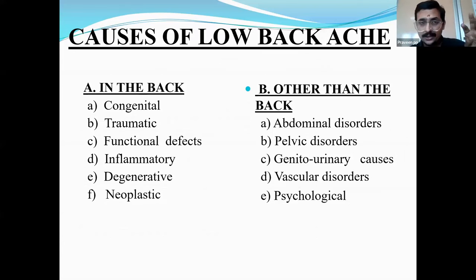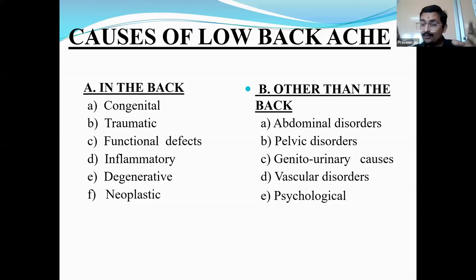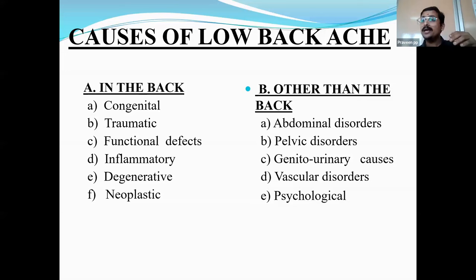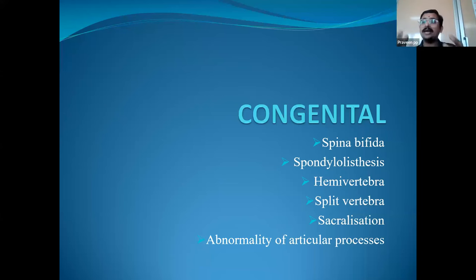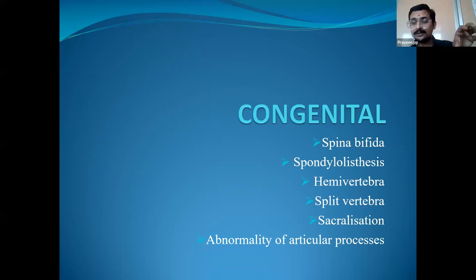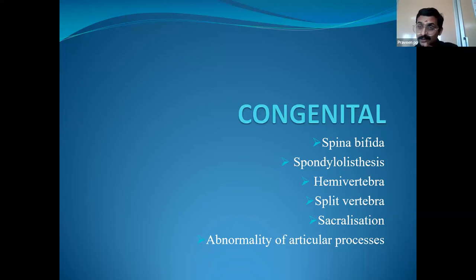In the back, causes include congenital disorders like spina bifida and hemivertebra, traumatic disorders, inflammatory and rheumatic conditions, degenerative conditions like spondylosis, and neoplastic causes like hemangioma or multiple myeloma. Other causes outside the back include abdominal disorders, pelvic disorders, and genitourinary conditions. For Ayurvedic practice, we need to consider these when assessing patients — for example, leukorrhea with low back pain has specific implications.